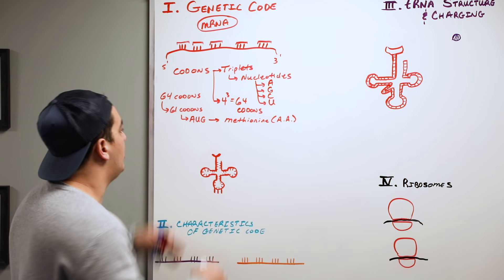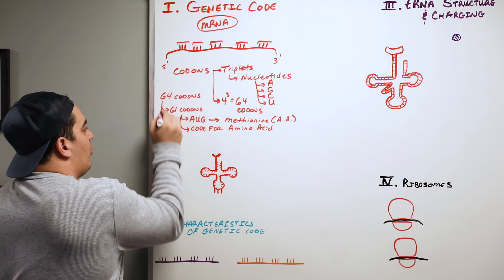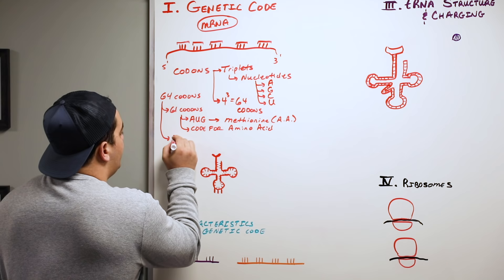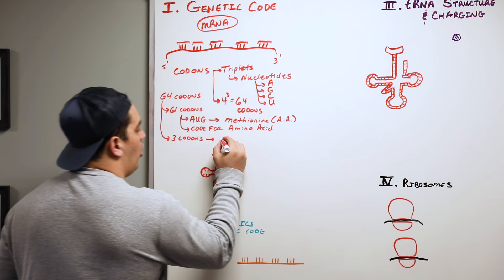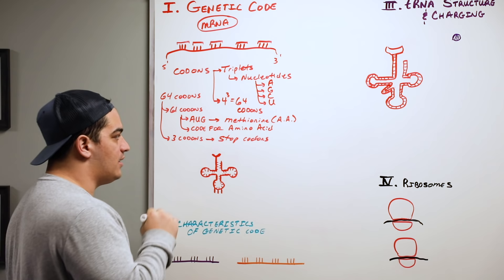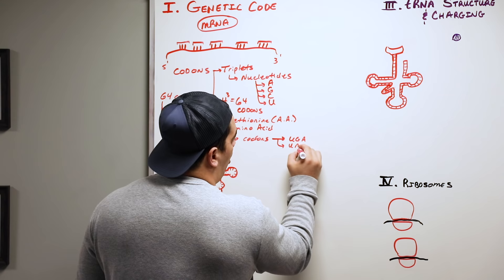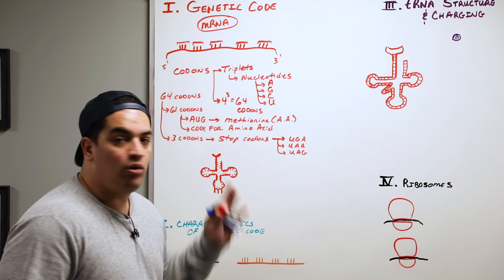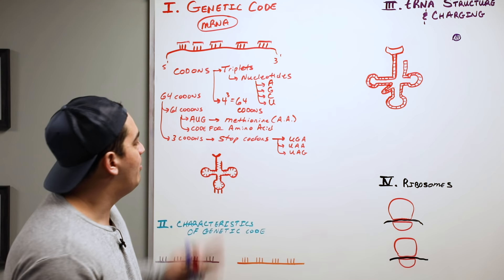Out of the remaining three codons, they do not code for an amino acid. Instead they code for terminating the translation process, and these are called stop codons. You can remember them with the phrase: 'you go away, you are away, you are gone.' These do not give you a particular amino acid — they stop the translation process.